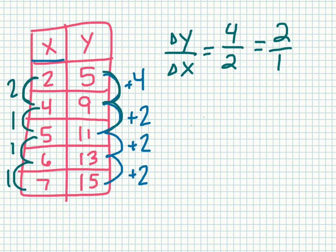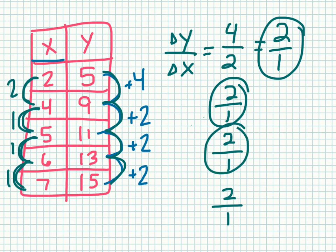My rate of change for my next two is 2 over 1. And then I have 2 over 1 and 2 over 1. So it looks like throughout, I have a rate of change of 2 over 1. So that's good. I have a constant rate of change or I have a slope.